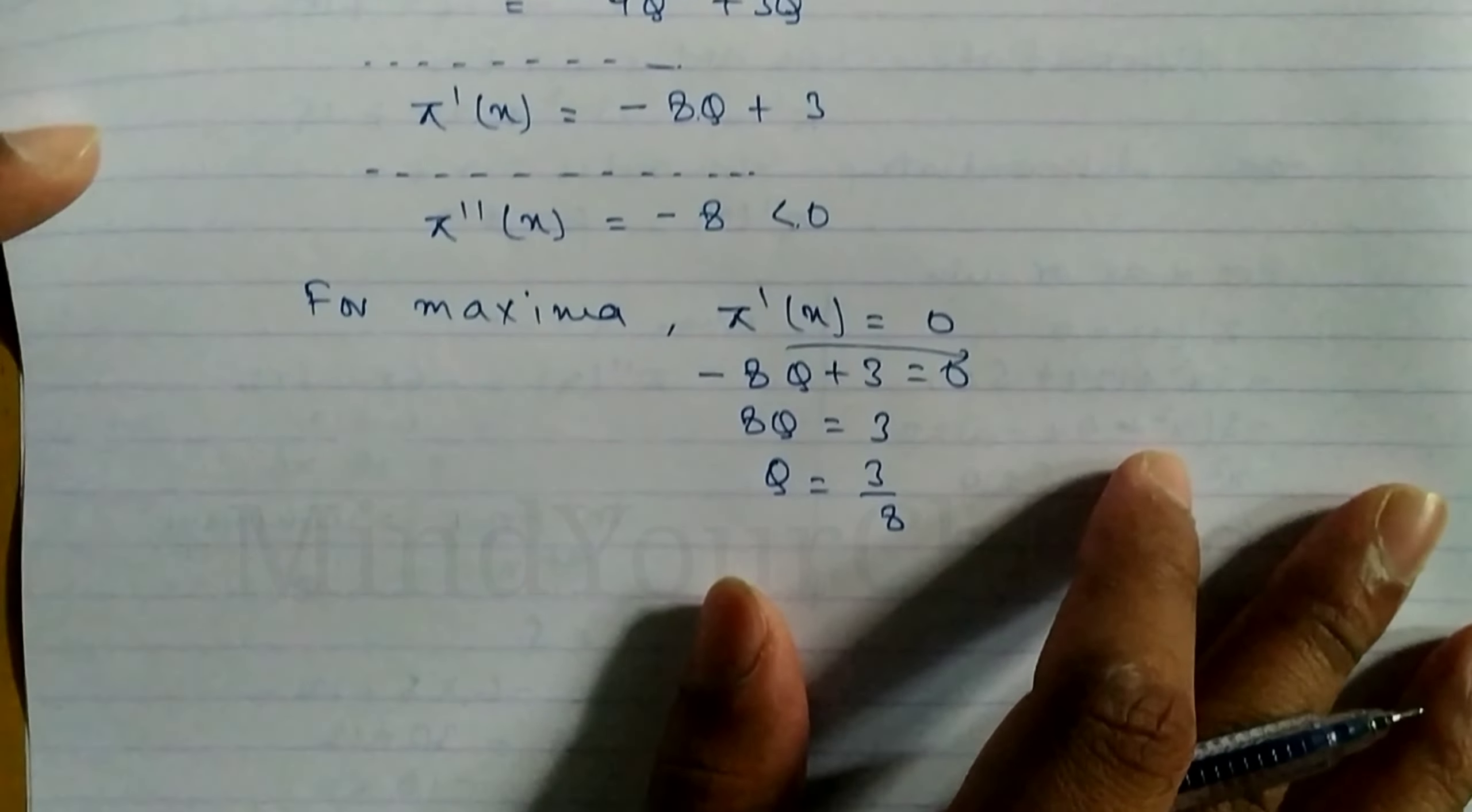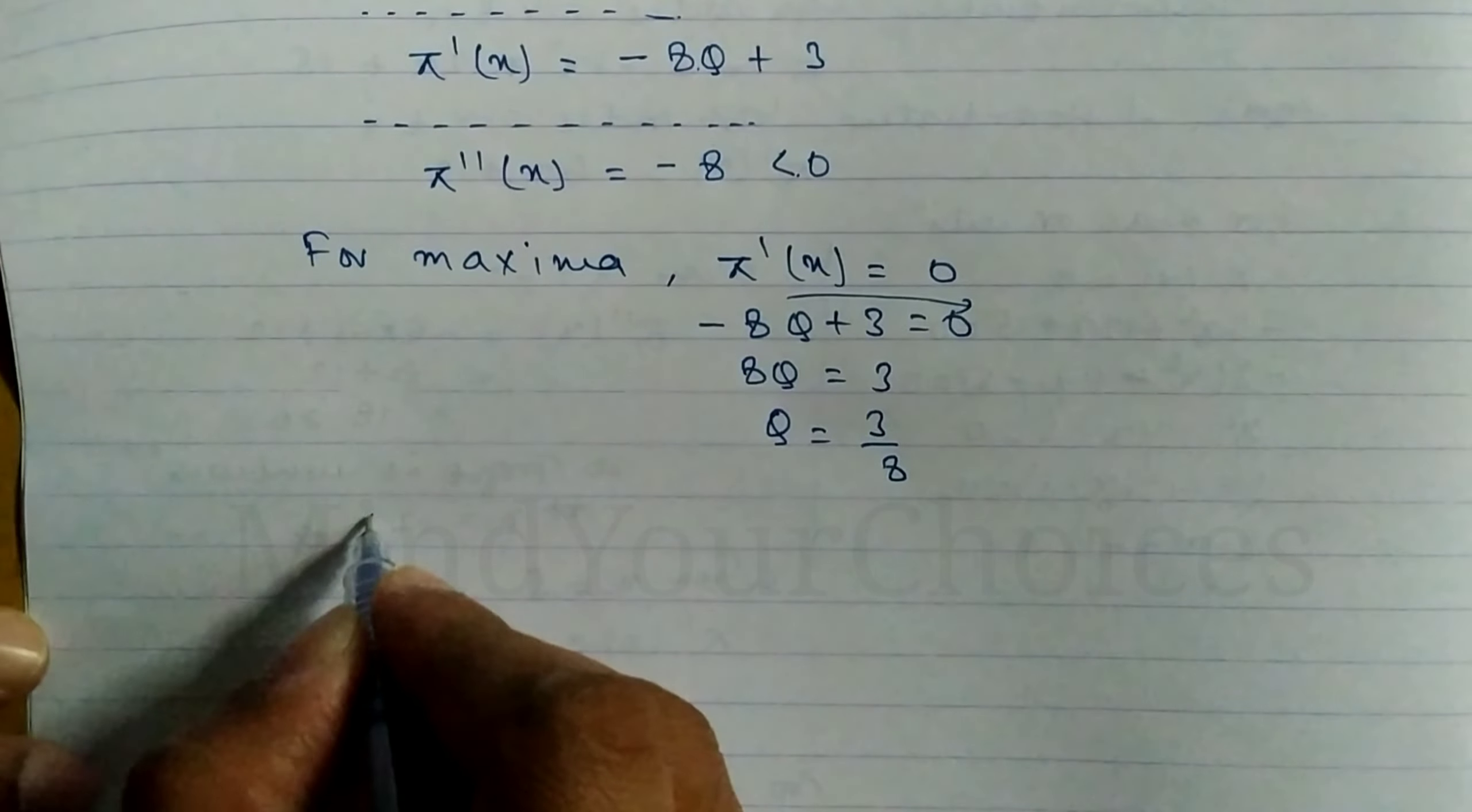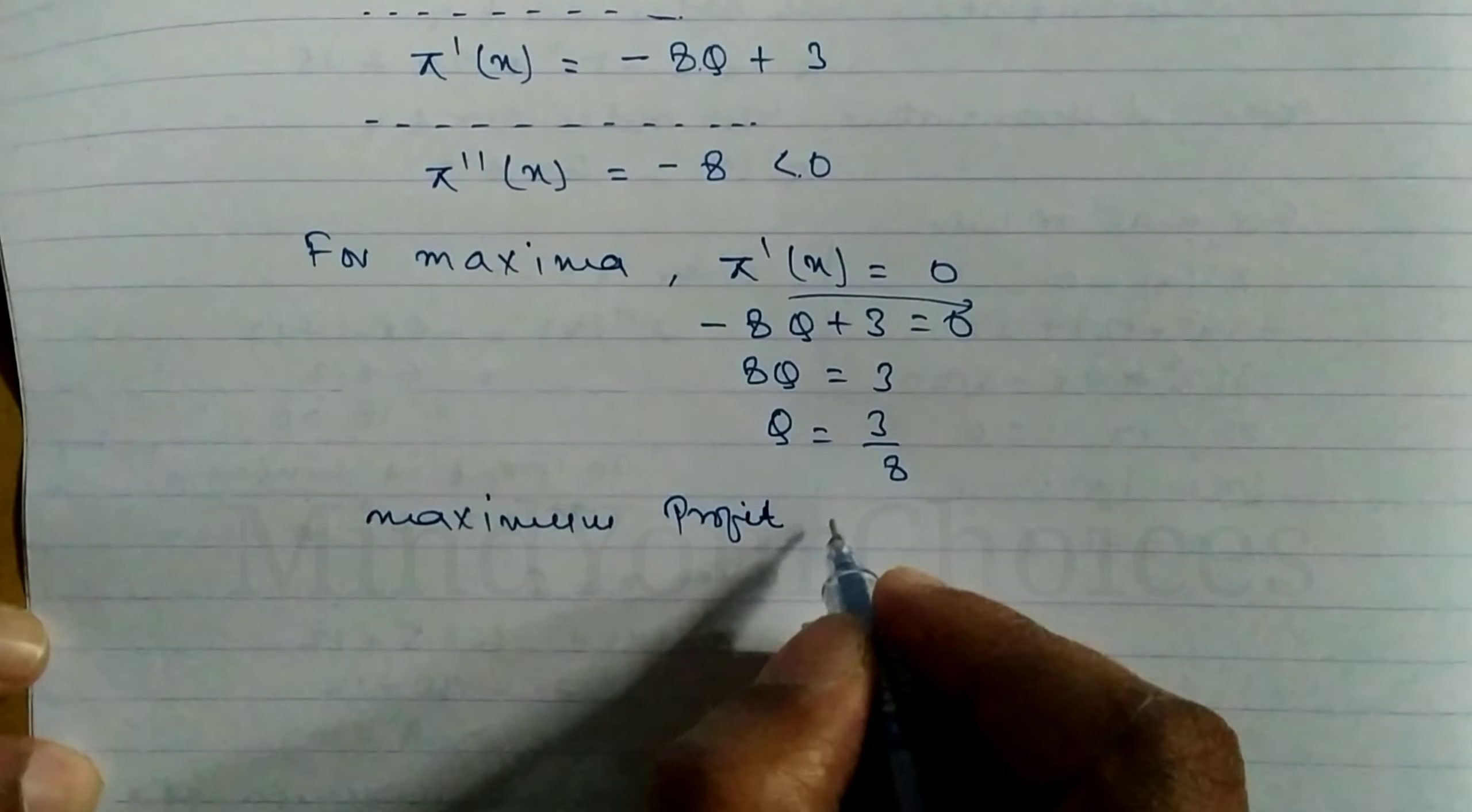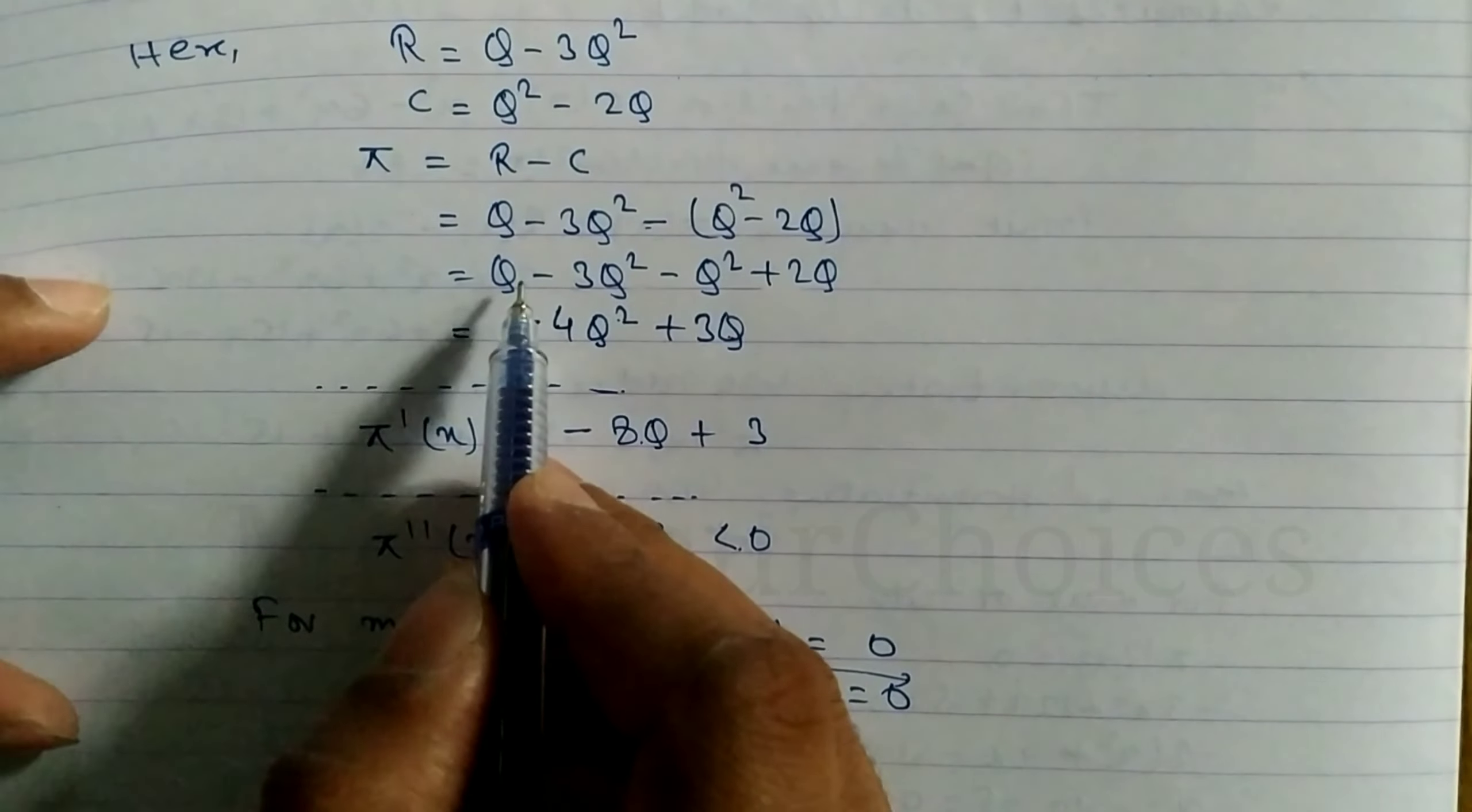Now what do we need to do? Maximum profit at Q equals 3 by 8. So we have to find out maximum profit. Profit equals, we need to find out profit.